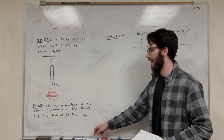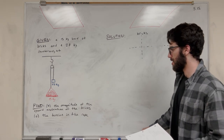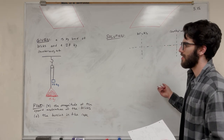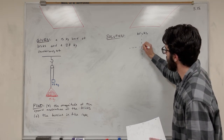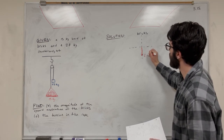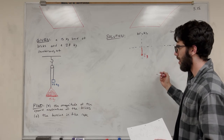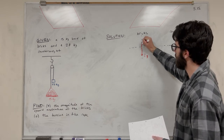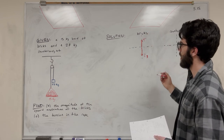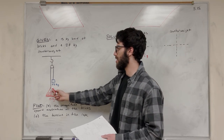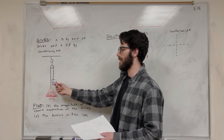Starting with the free body diagrams. For the bricks, drawn in red: the bricks have weight, so there's a gravity force pulling downward. There's also tension pulling upward. The tension is constant throughout the rope, so the tension is the same on both sides.